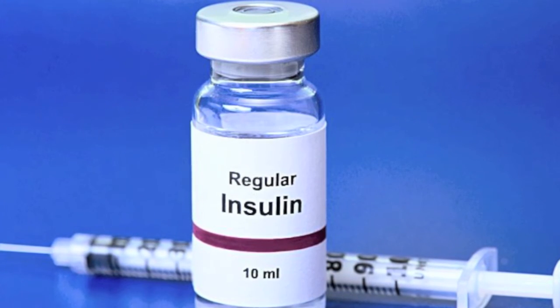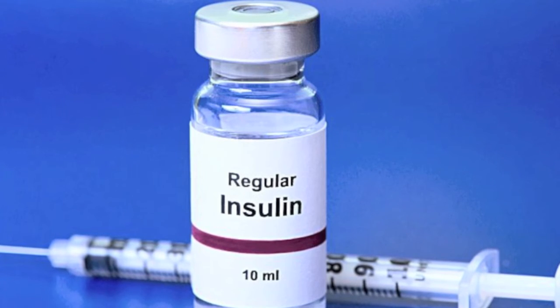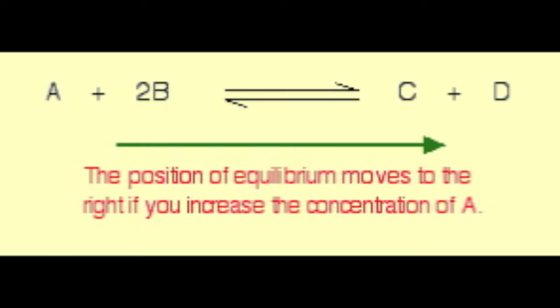It also forces body cells to take up glucose from the blood. So this time, the opposite happens. Since there's more glucose, and since the concentration is higher, the equilibrium position shifts, and the body reacts in a way so that there can be less glucose.